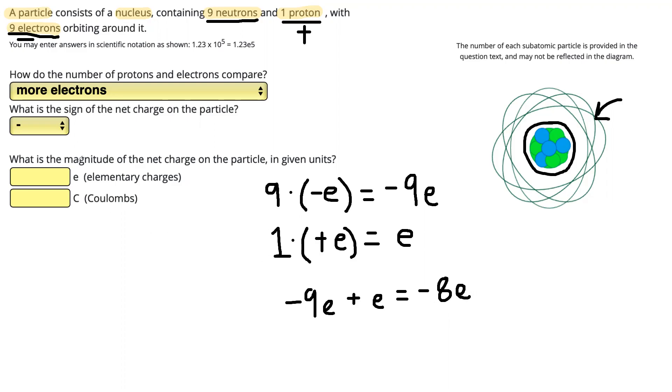So our overall charge magnitude, that means we don't need to include the negative, is 8e. Final thing we can do is find that in units of Coulombs. e is the elementary charge on one proton or one electron, and it has a value of 1.6 times 10 to the negative 19 Coulombs. So a really tiny number for the charge on one proton or one electron.